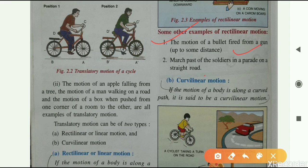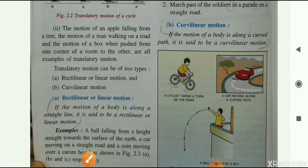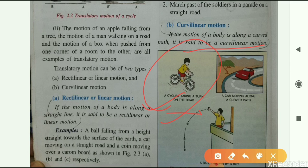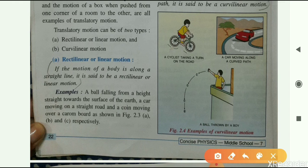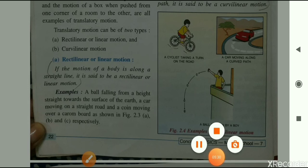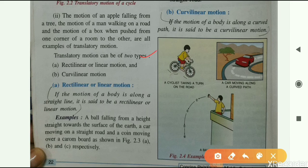Other examples of rectilinear motion include the motion of a bullet fired from a gun and the march past of soldiers in a parade on a straight road. Curvilinear motion is when the motion of a body is along a curved path. Examples include a cyclist taking a turn, a car moving along a curved path, and a ball thrown at an angle by a boy.